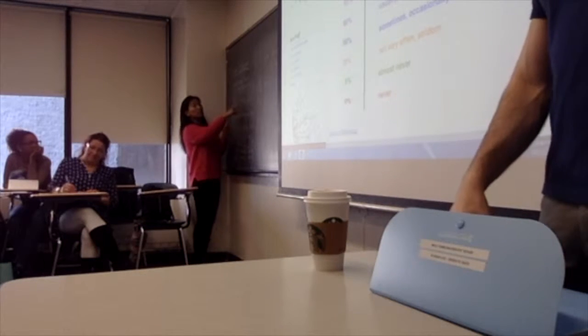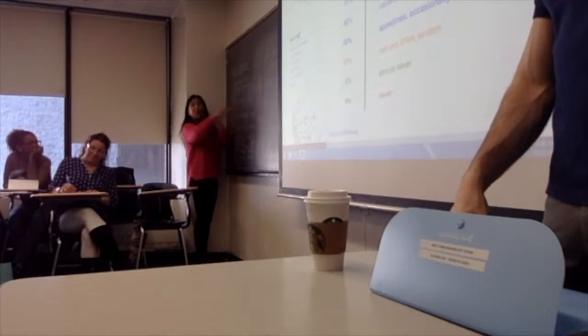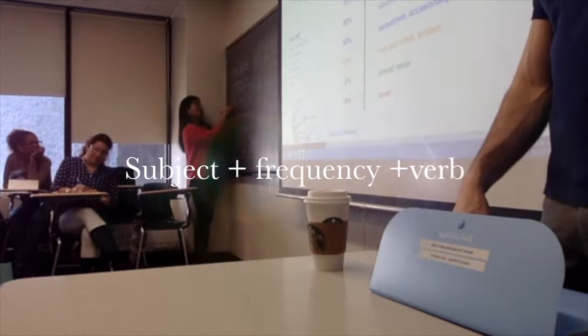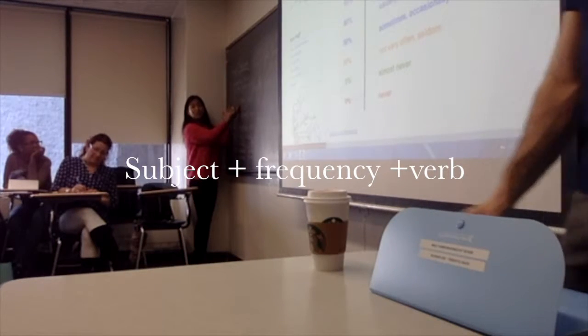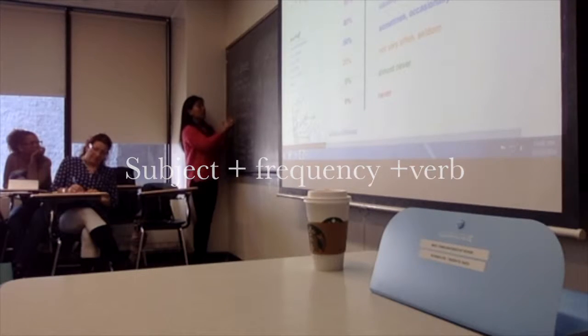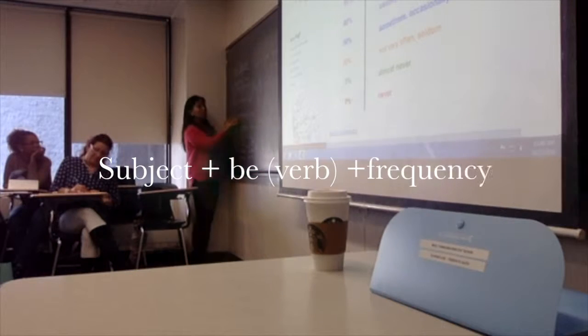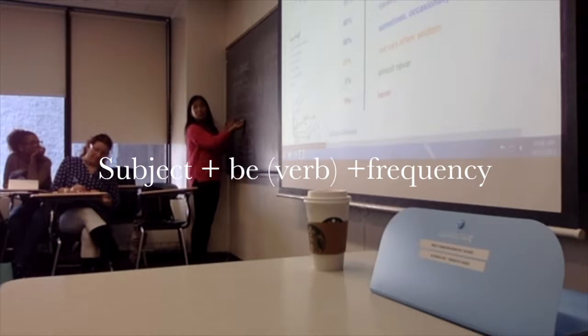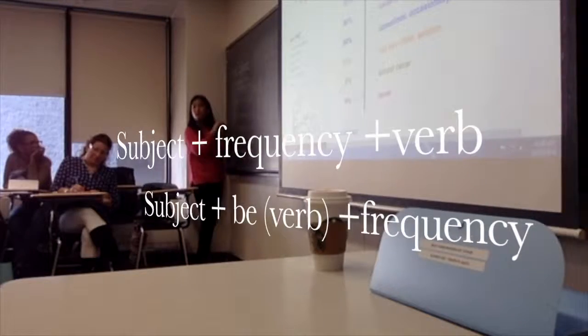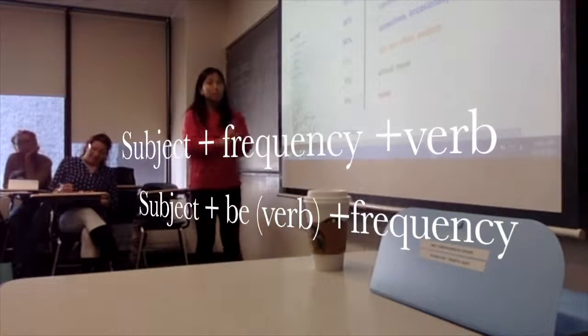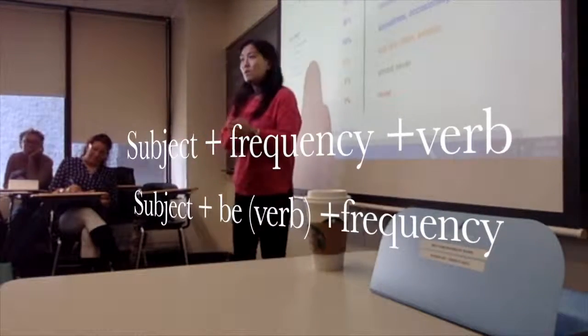Those are the two rules. So if you use a frequency word, all other words: subject, then the frequency, then the verb. But for the be verb: subject, be verb, frequency word. Okay? So that's the only exception. Okay. One second.